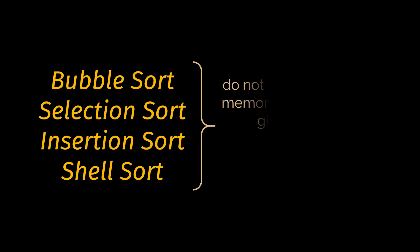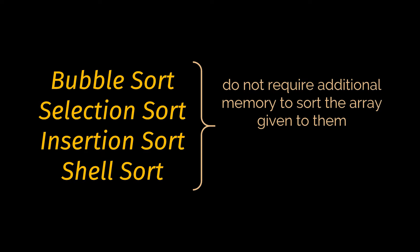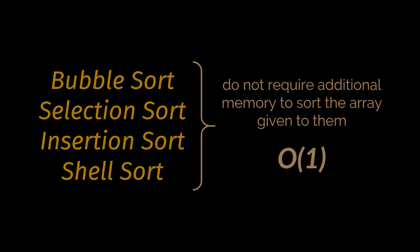The four algorithms discussed so far — bubble sort, selection sort, insertion sort, and shell sort — are all in-place sorting algorithms and do not require additional memory. Therefore, the additional space complexity required by these algorithms is constant, represented as O(1).